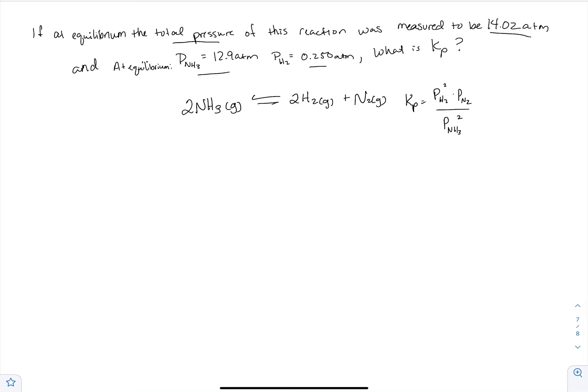To get Kp, you'll notice I already wrote the expression out. Make sure it makes sense to you. I have the 2 there by the hydrogen because of this front number, and then I have the 2 there because of that front number. The other one doesn't have a 2 because there's no number in front.